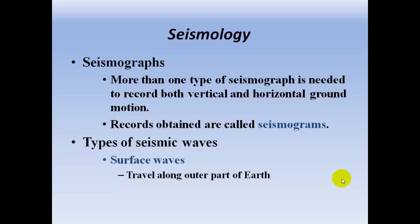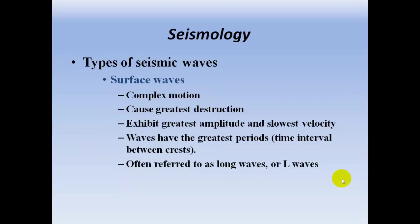Types of seismic waves. We have surface waves, which travel along the outer part of the Earth. They have a complex motion, cause the greatest destruction, and exhibit the greatest amplitude — so they have the highest wave heights. They also have the slowest velocity and the greatest periods of time between crests, often referred to as long waves or L waves.